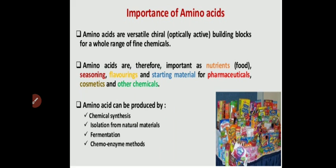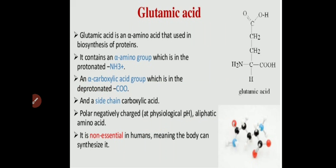Here we are going to focus on the production of amino acids — specifically glutamic acid and lysine. Your syllabus includes the production of two types of amino acids: one is glutamic acid and the second is lysine. In today's session, we are going to focus on the biosynthesis of glutamic acid using microorganisms with the help of the fermentation process.